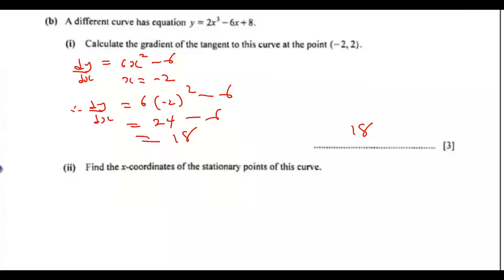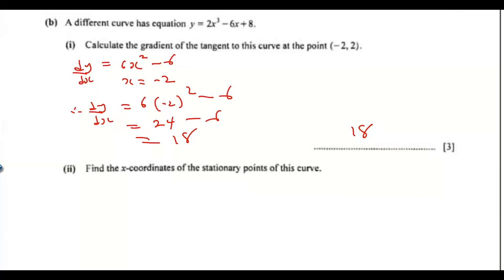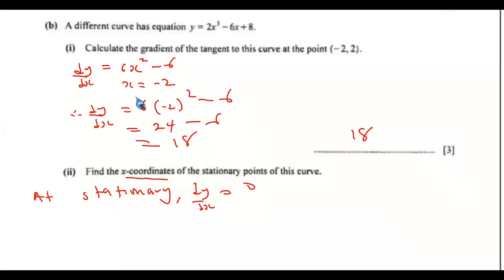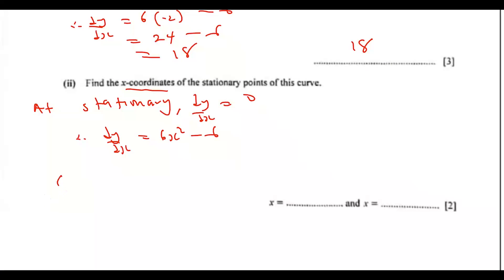So part b(ii): find the x-coordinate of the stationary points of this curve. So we want to find the x-coordinate of the stationary point of this particular curve. At a stationary point, dy/dx is always equal to 0. I already have dy/dx equal to 6x squared minus 6, so we set 6x squared minus 6 equal to 0.